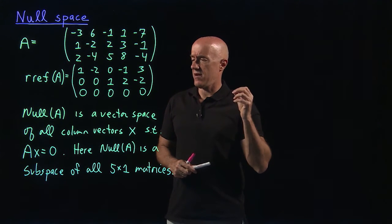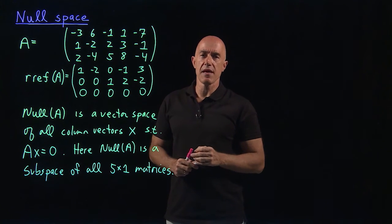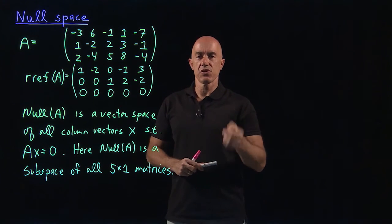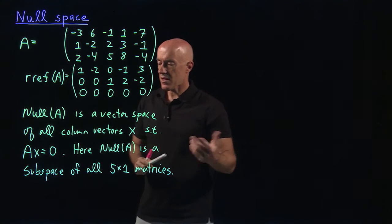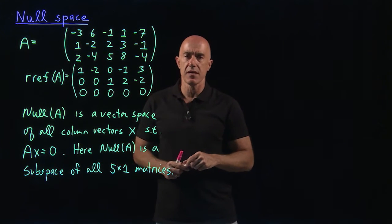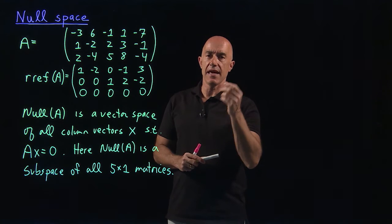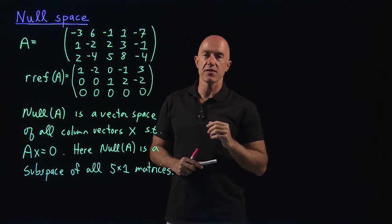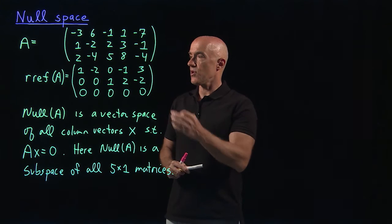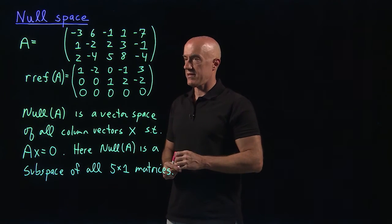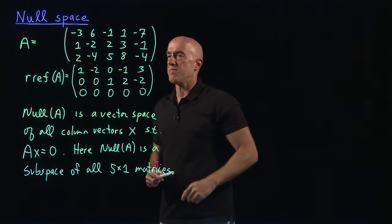Why is the null space a vector space? Well, if you have two vectors in the null space, if you multiply them by constants and add them, do you still get a vector in the null space? The answer is yes. If you have A times the sum of two vectors, it's the same as A times the first vector plus A times the second vector. And if both vectors are in the null space, then you get zero. So the null space of matrix A is a vector space, and here it will be a subspace of all five by one column vectors.